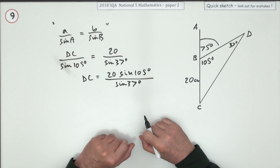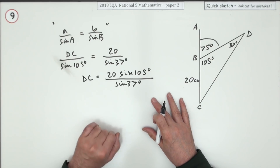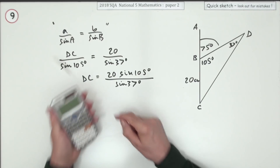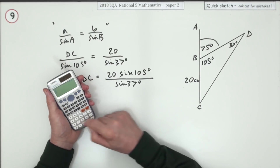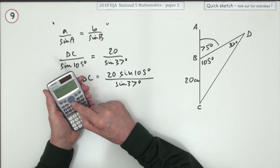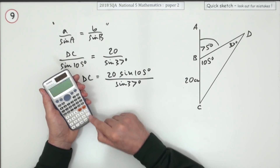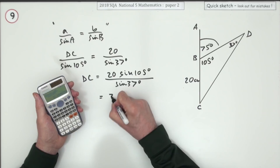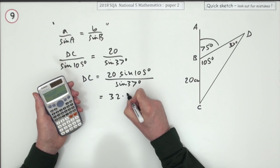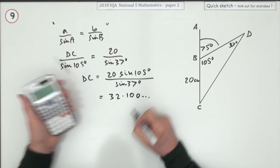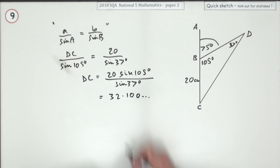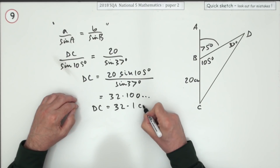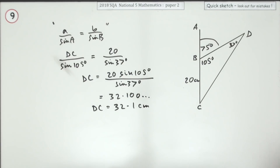After you've put that into your calculator, that'll be the answer because there's nothing else to do. Press the buttons and you get 32.100... so DC is 32.1 centimetres.